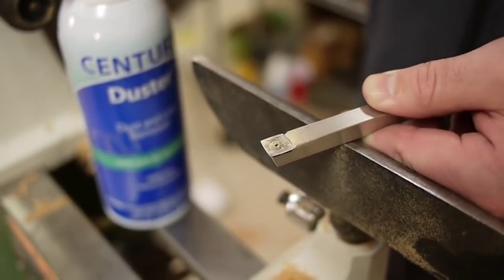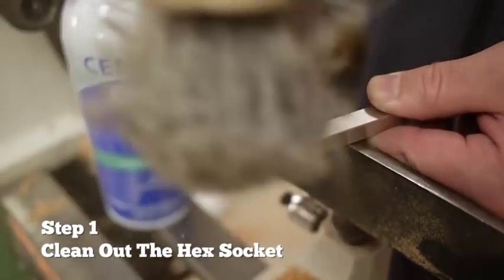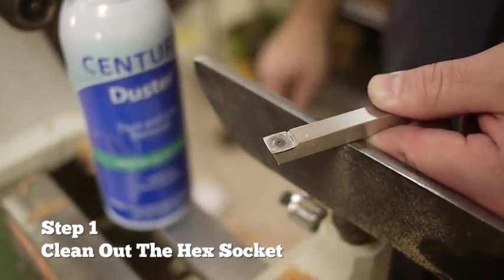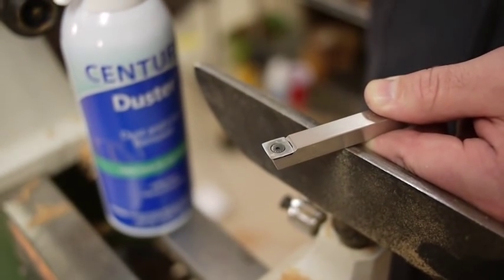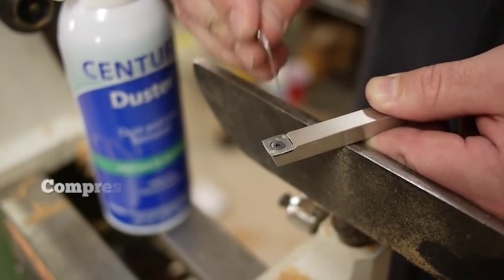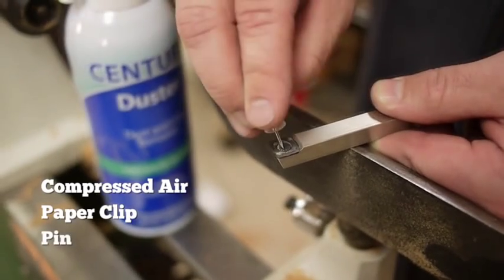The first step is cleaning out the hex socket and the screw. If you don't clean out the dust, the hex wrench won't seat properly and there's a risk you'll strip it out. We prefer to use a can of compressed air, but a paper clip or pin will work just as well.